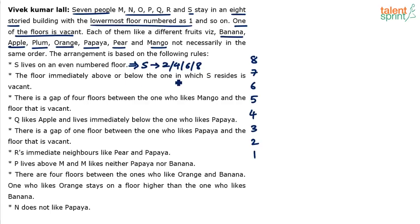The floor immediately above or below the one in which S resides is vacant. So the vacant floor can be floor 1 or 3, floor 3 or 5, floor 5 or 7, or floor 7 — there are multiple possibilities for the vacant floor depending on which floor S takes.